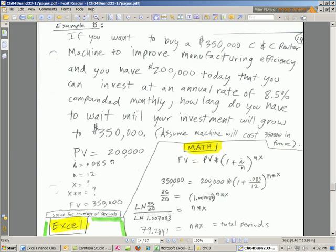Here's our example. If you want to buy a $350,000 CNC router machine to improve manufacturing efficiency, and you have $200,000 today that you can invest at an annual rate of 8.5% compounded monthly, how long do you have to wait until your investment will grow to $350,000? Assume machine will cost $350,000 in the future.